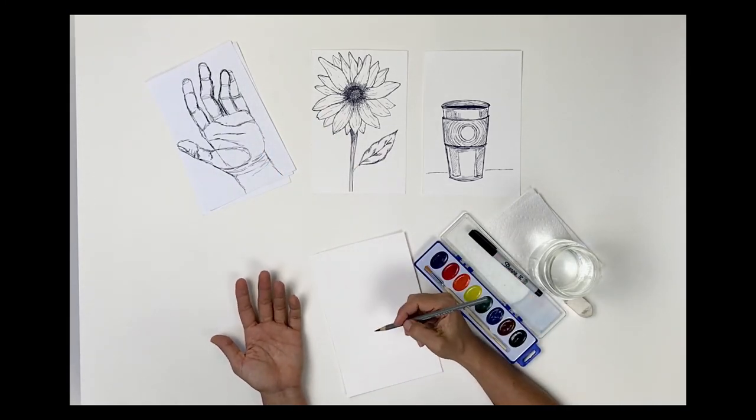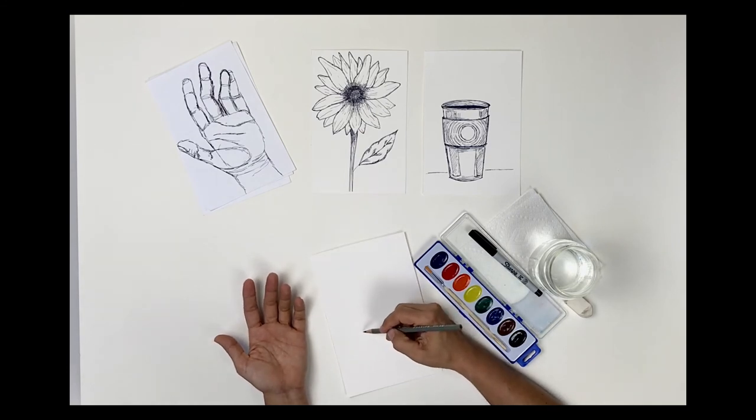I'll hold my hand in a comfortable position and start out with a pencil. I'm going to start out by just making what I call construction lines, the basic shapes that form the hand.